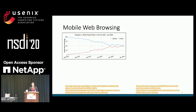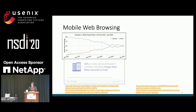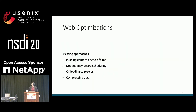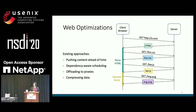Mobile settings dominate global web traffic today, and there is a strong incentive to deliver fast page loads because users are very sensitive to these delays and content providers have a lot to lose if their pages are slow. There has been a lot of work done to improve mobile web performance, however existing optimizations mainly focus on the latter stages of the page load process.